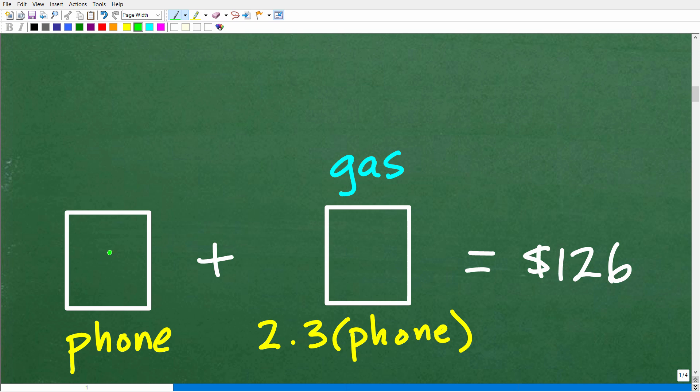Okay, so here is Kim's phone bill. And we know that her gas bill is 2.3 times whatever her phone bill is. So the grand total of both of these bills is $126.